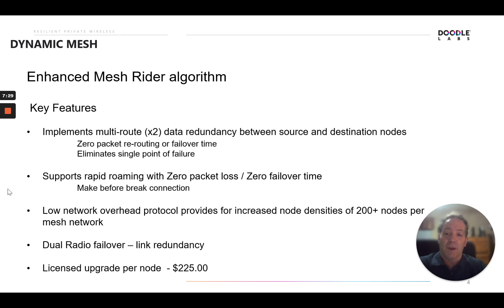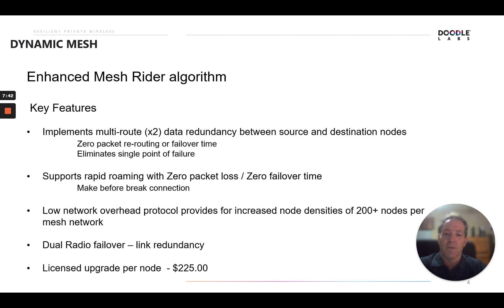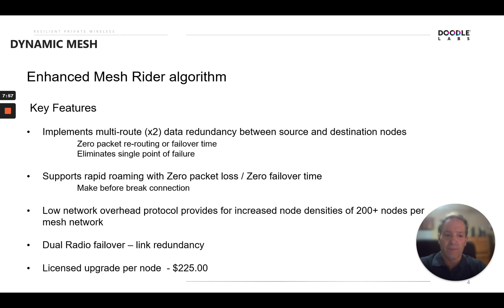Another advantage of dynamic mesh is very low network overhead. It's a very efficient protocol, which means we can support increased node densities of 200-plus nodes per mesh throughout the network. Another feature is dual radio failover, which provides dual radio, dual link redundancy through dynamic mesh. This is a license upgrade per node, implemented through a license key.